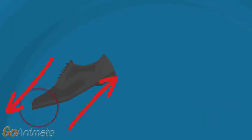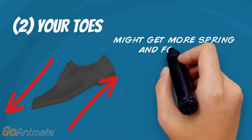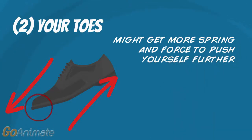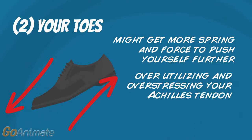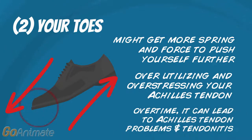On the other hand, if you land on your toes like the sprinters, you might get more spring and force to push yourself further. But at the same time, you are also over-utilizing and over-stressing your Achilles tendons. So if you keep continuing landing on that tendon over time, it can lead to issues and breakdown of your Achilles tendons, which can lead to tendinitis.